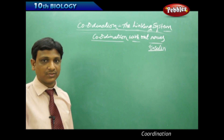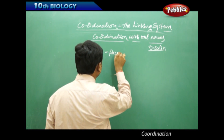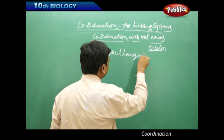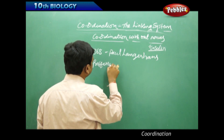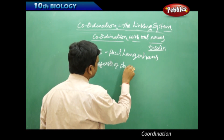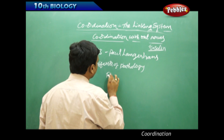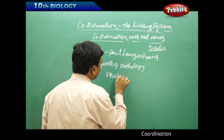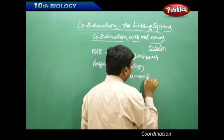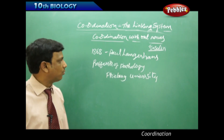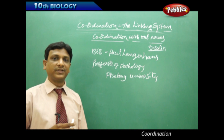Now let us talk about the story of insulin. In 1868, there was a scientist called Paul Langerhans — he was a professor of pathology at Freiburg University. When Paul Langerhans was doing his research in pathology, he made an important observation.